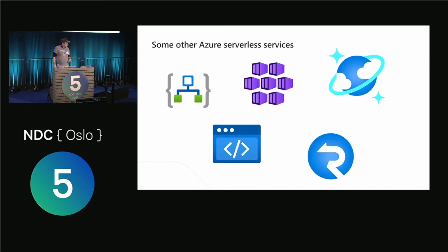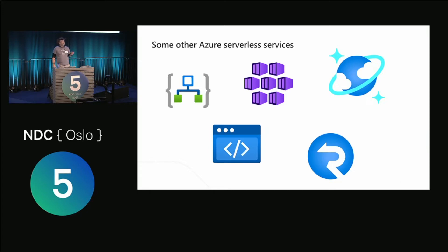Azure Functions are not the only serverless offerings on Azure. We have tons of services that are either serverless by nature or can run in a serverless mode. For example, we have Logic Apps — a serverless workflow built using building blocks, a no-code or low-code scenario. We have AKS, the Kubernetes service, which can run in serverless mode. Azure Cosmos DB also has a serverless mode. We have SignalR, which can be deployed in consumption mode. Static Web Apps is also a serverless offering. When I say serverless mode, essentially it means when you don't use it, you don't pay for it.